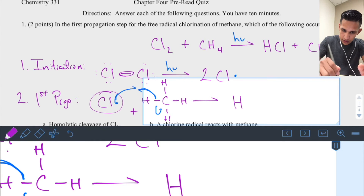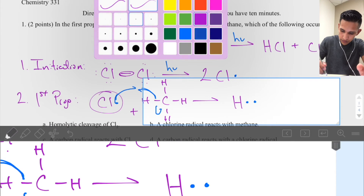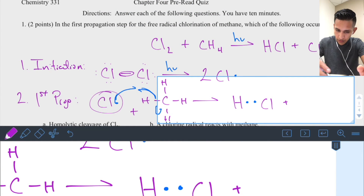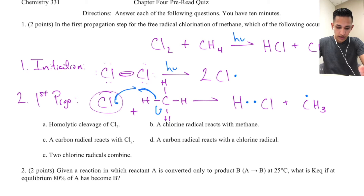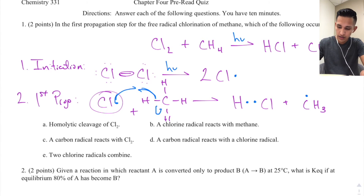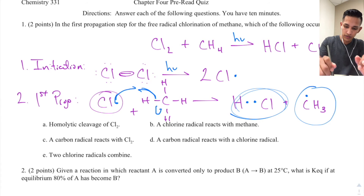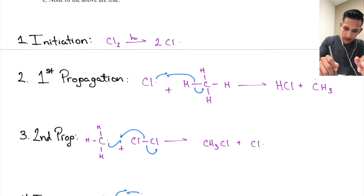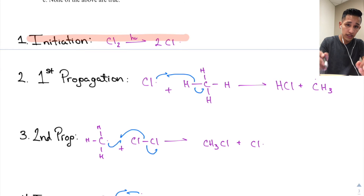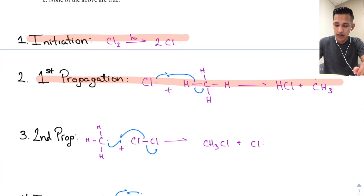So we end up with hydrochloric acid and our carbon radical (methane radical). This is the second overall step but the first propagation step. There are two propagation steps total. The carbon radical continues into the second propagation step, while the HCl is stable on its own. To recap: the initiation step involved homolytic cleavage of Cl₂; the first propagation formed HCl and the carbon radical.